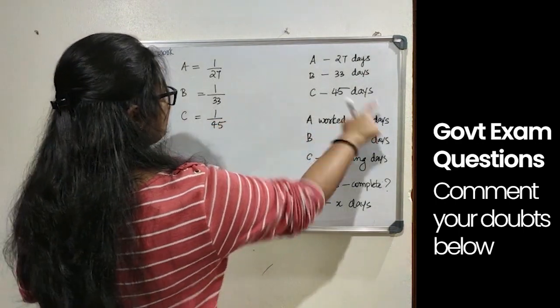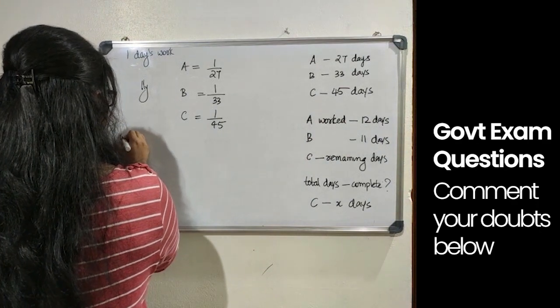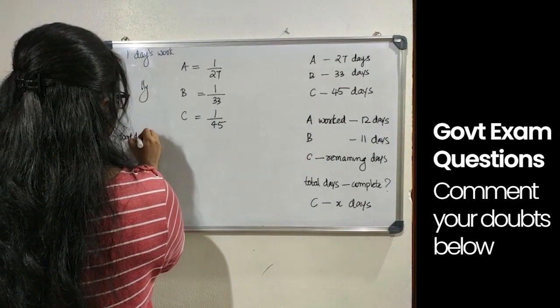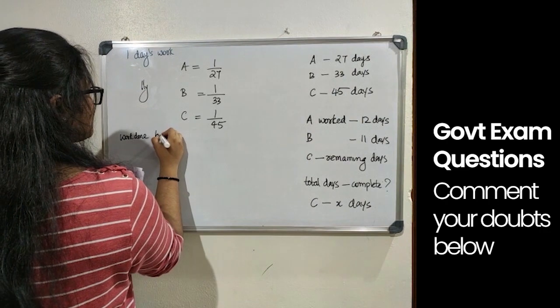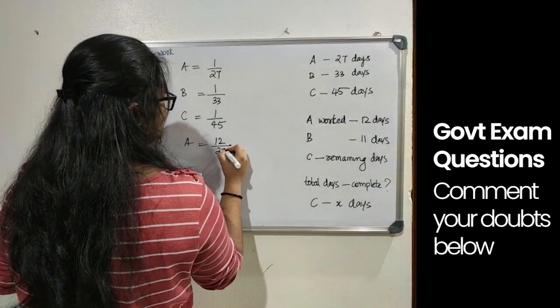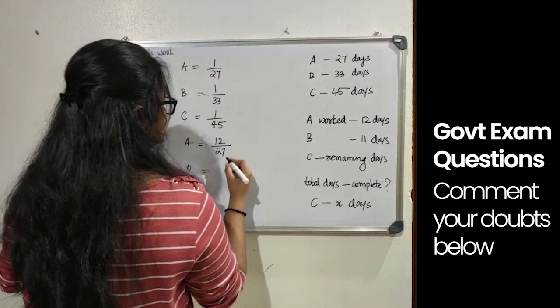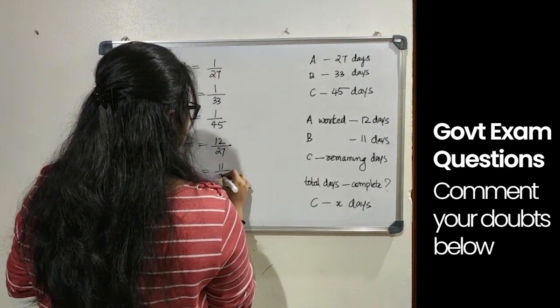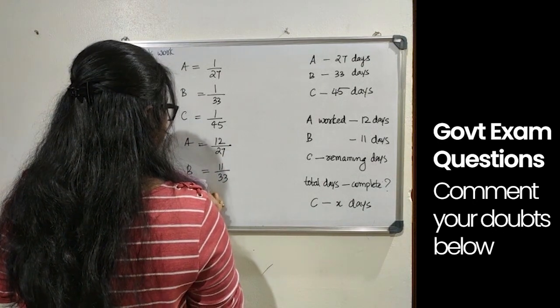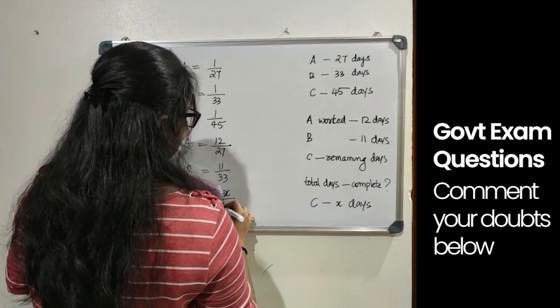It is given that A worked for 12 days. So work done by A equals 12 by 27. That is 12 into 1 by 27. Similarly, B equals 11 by 33 and C equals X by 45.